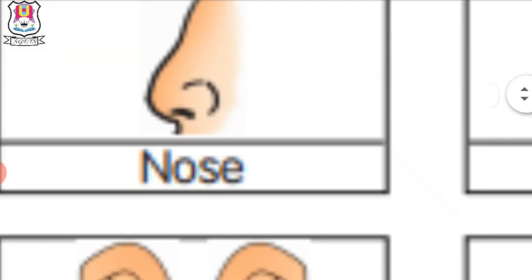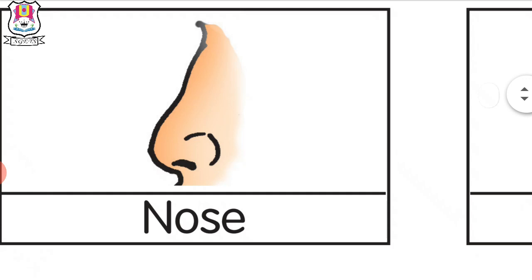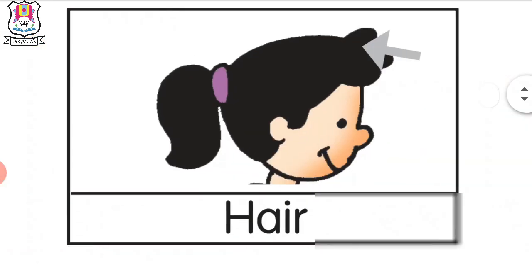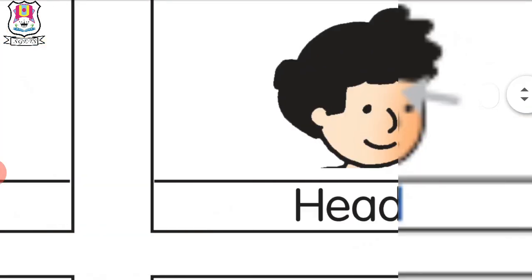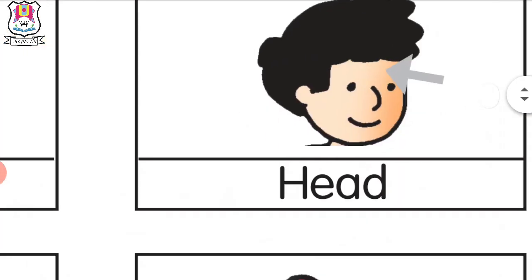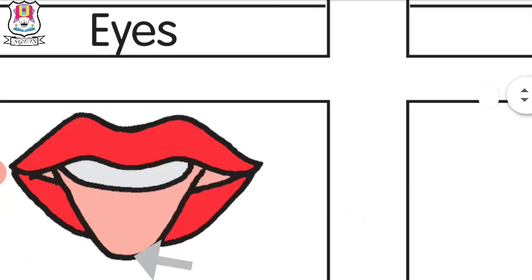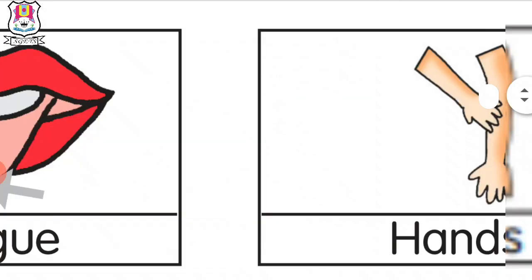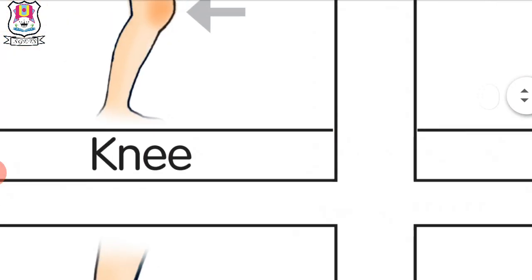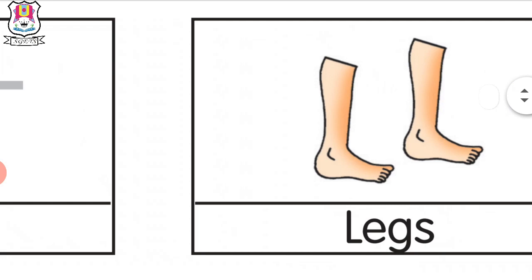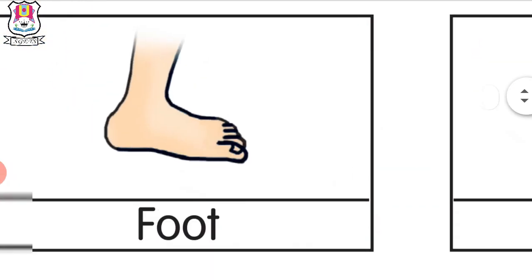Once again. What is this? Nose. Nose. Ears. Head. Eyes. Lips. Tongue. Hands. Knee. Legs. Foot.